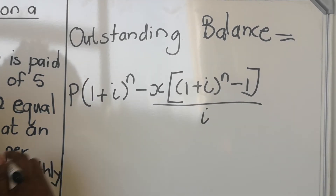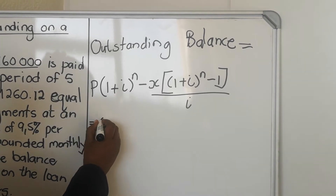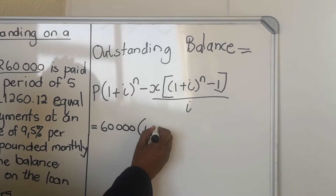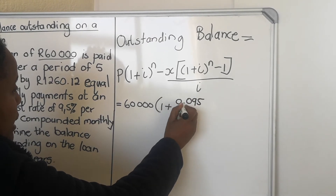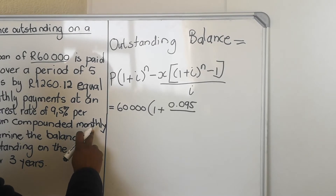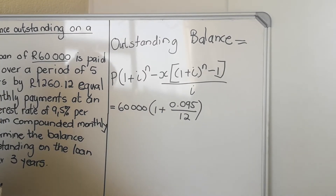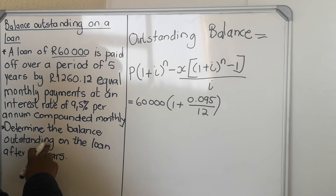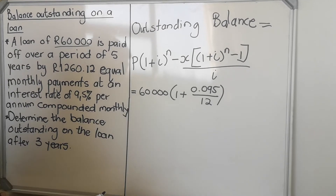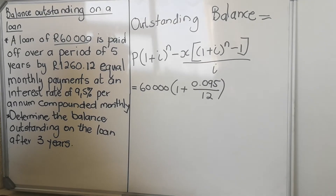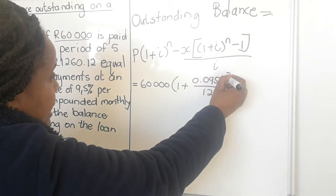P is the total loan amount, which is R60,000. Then one plus i, where i is the interest rate — always write it as a decimal — 0.095, compounded monthly, so divide by 12 (the number of months in a year). The n is the number of payments already made. To find the balance after three years, you calculate three years in months: three times 12 equals 36. So your n is 36.